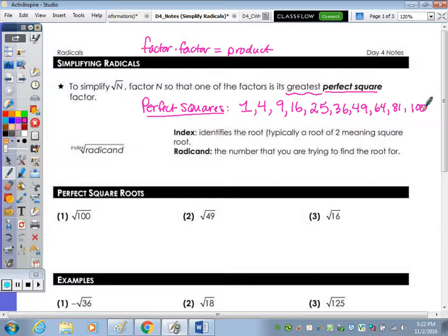The vocab, you can go ahead and read that. The index is indicating your root, so square root or cube root, it's the number out front. The radicand is the number underneath the symbol. So let's take a look at 1, 2, and 3.